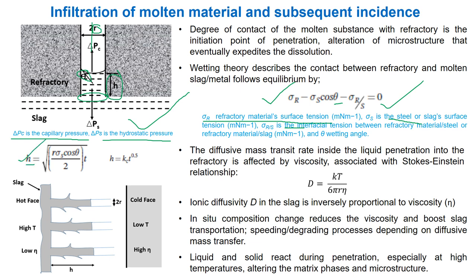This is the penetration depth, and this is the rate which depends on time. The viscosity gradually decreases from the hot phase to the cold surface. The diffusive mass transit rate inside the liquid penetration in the deep path p is affected by viscosity, associated with the Stokes-Einstein relationship.